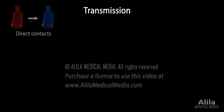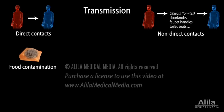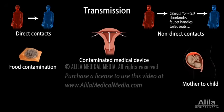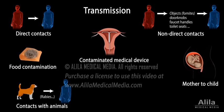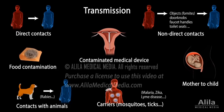Infectious diseases can be acquired in different ways: through direct or non-direct contacts with an infected person, via consumption of contaminated foods, having a contaminated medical device, from an infected mother to the child during pregnancy or birth, or via contacts with an infected animal or animal waste, or through bites from carriers such as mosquitoes or ticks.